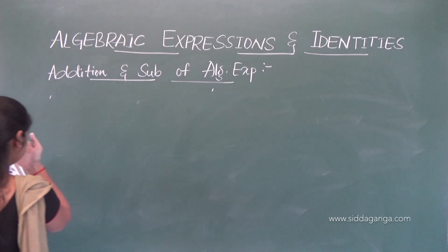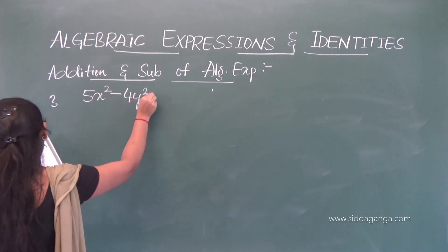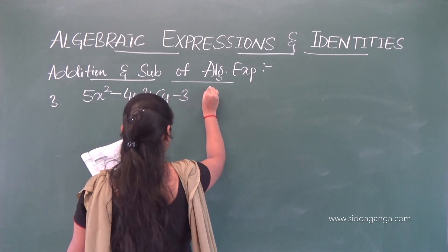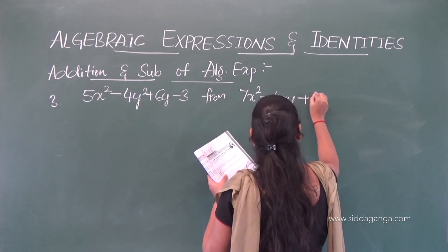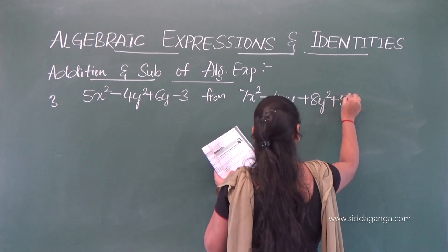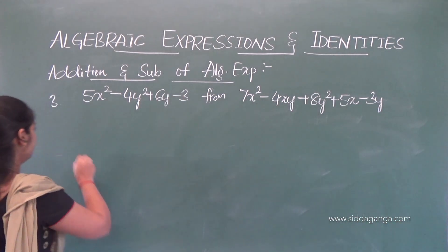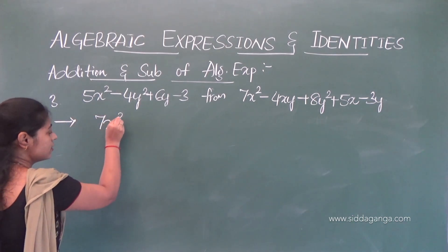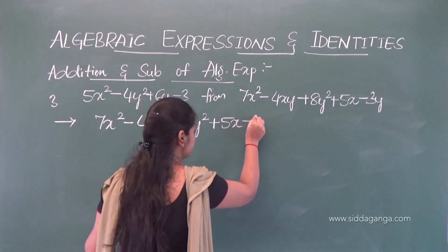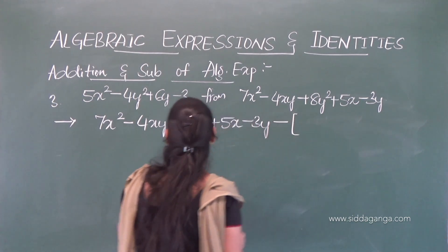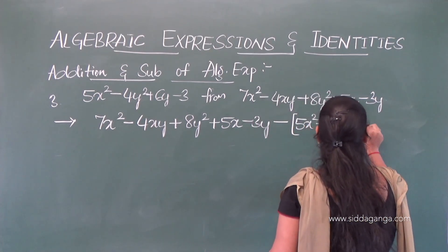Next: Subtract 5x squared minus 4y squared plus 6y minus 3 from 7x squared minus 4xy plus 8y squared plus 5x minus 3y. So we write 7x squared minus 4xy plus 8y squared plus 5x minus 3y, subtract minus (5x squared minus 4y squared plus 6y minus 3).